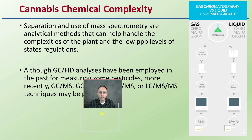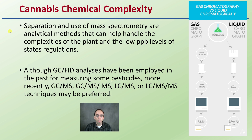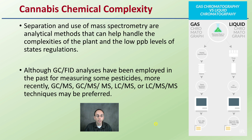Cannabis chemical complexity means that separation and the use of mass spec are analytical methods that can help handle the complexities of the plant and also the low parts per billion levels required by state regulations. Other analyses have been employed in the past for measuring some pesticides, but mass spec techniques tend to be generally preferred. There's gas chromatography and liquid chromatography — a comparison between the two, looking at mass spec chromatography specifics. They're slightly different processes but both yield results for comparison.